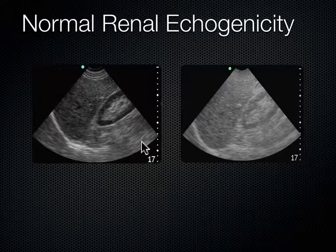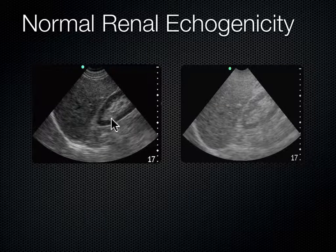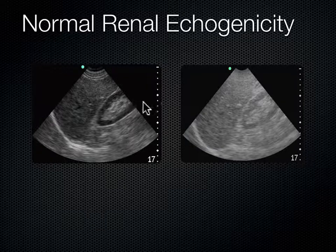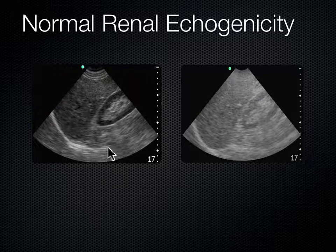Looking at these two images: the difference between them is the gain. The right image here is over-gained — pretty washed out, like you've got to wear sunglasses. Whereas on the left image, you can see the cortex of the kidney is less echogenic, or slightly darker, than the liver. If you can make out those subtleties, you've got your gain adjusted just right. When over-gained, they wash out together and it's hard to tell the cortex is less echogenic than the liver. I know I've got my gain set right when my kidney's cortex looks darker than my liver or spleen.